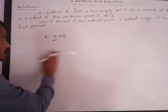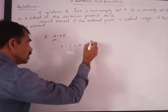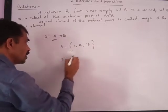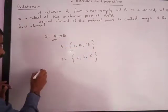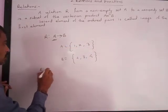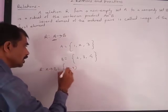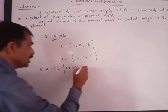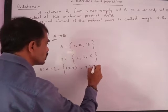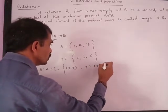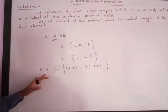Let us try to understand this with an example. If A is the set {1, 2, 3} and B is the set {2, 3, 4}, and we have a relation R from A to B defined as the set of (x, y) such that y = x + 2, then this is called a relation.